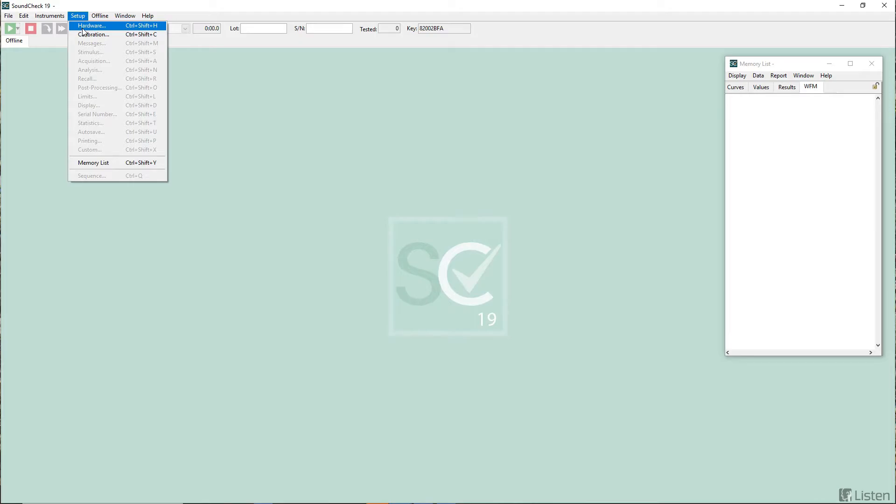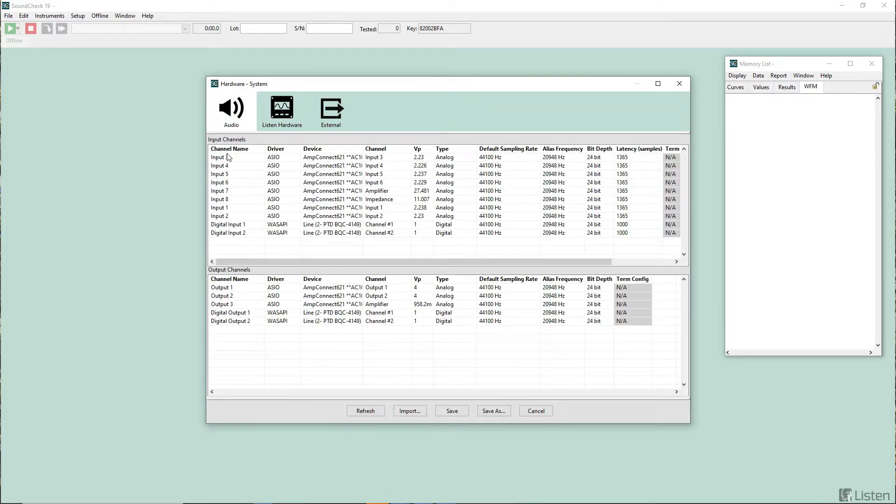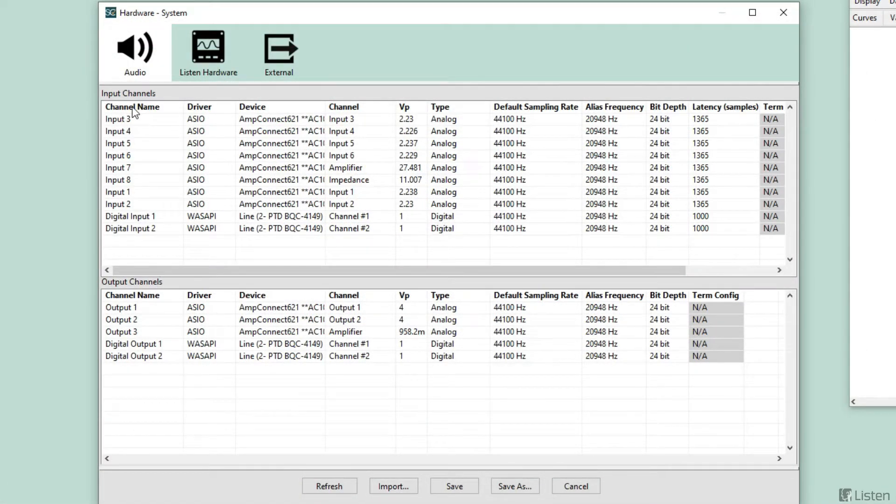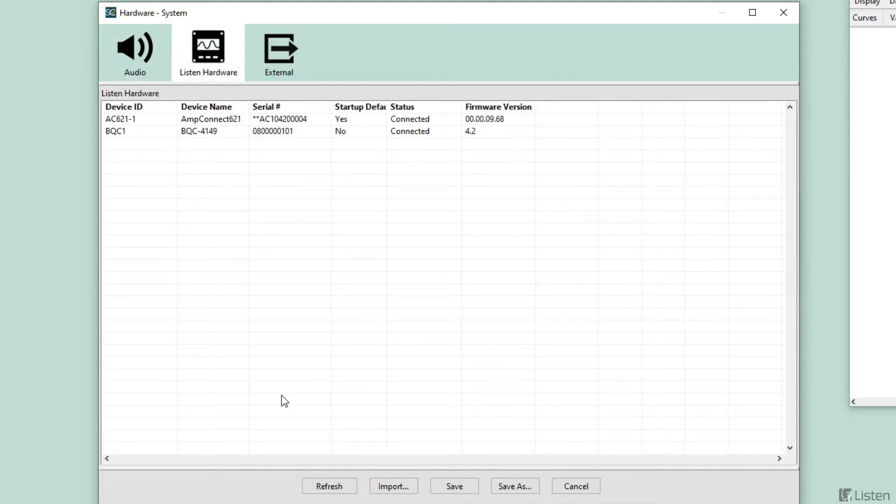Let's look at the support in Soundcheck 19. If I go to the Setup Hardware tab, you'll see I've got a 621 configured with much more inputs configured as an ASIO device. These are my input channels. I have discrete inputs for the amplifier and impedance. This is a self-calibrating interface. It's calibrated as it leaves Listen. And we could support sampling rates all the way up to 192 kilohertz.